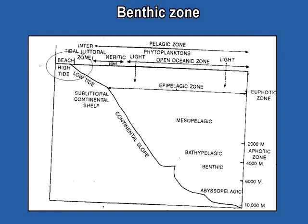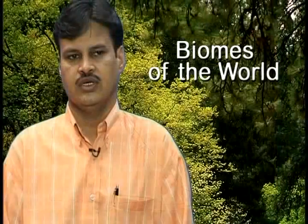The first part of the benthic zone is called the supra-littoral zone — you can call it the beach. The second part is the littoral zone, which represents the area between the upper and lower tide levels, also called the intertidal zone — it is the shore of the ocean. The next part of the benthic zone is the sub-littoral zone, or continental shore.